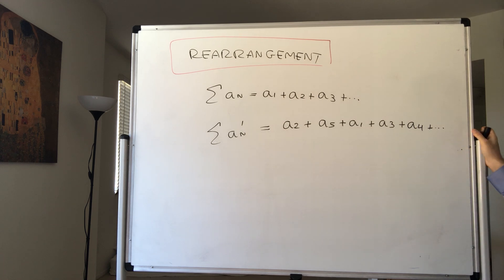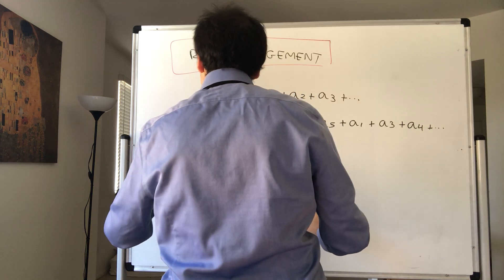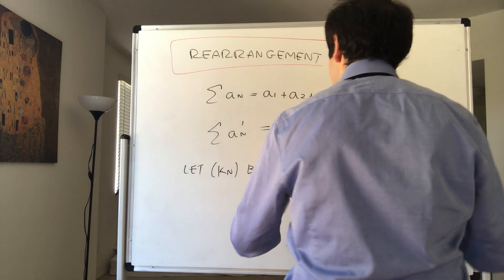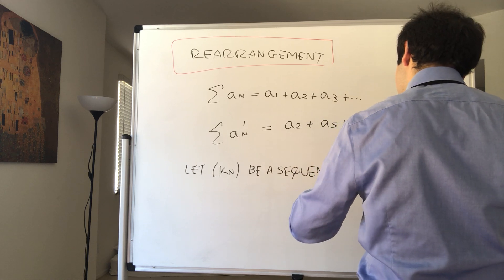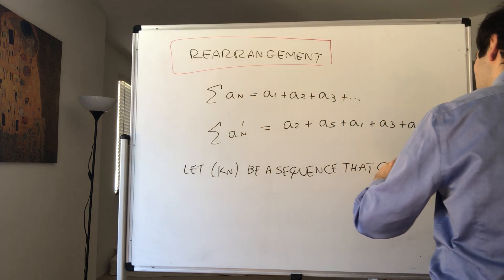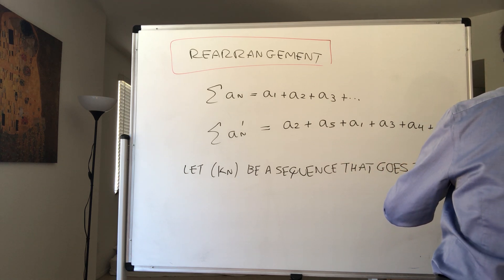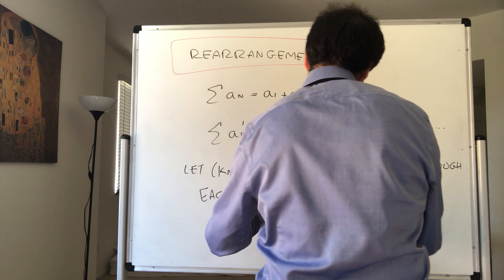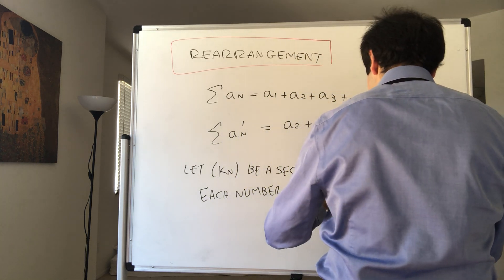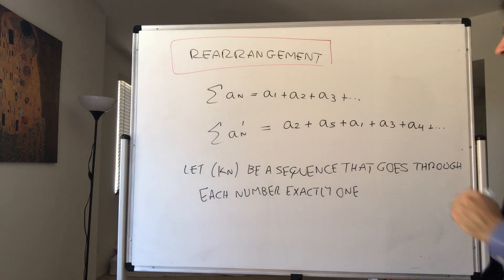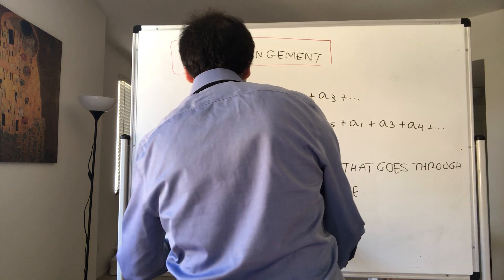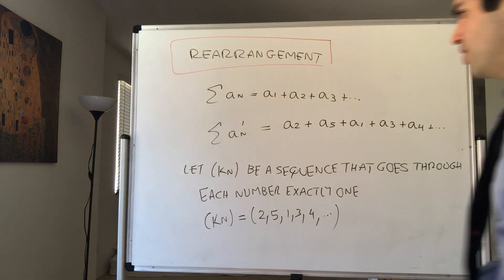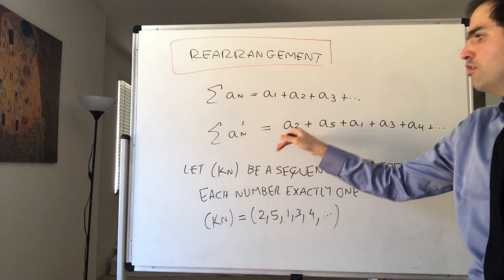How do you define it rigorously? Simply let K_n be a sequence that goes through all the natural numbers, each number exactly once. It's basically a bijection between the natural numbers and the natural numbers. So for instance here K_n would be the sequence 2, 5, 1, 3, 4 dot dot dot.